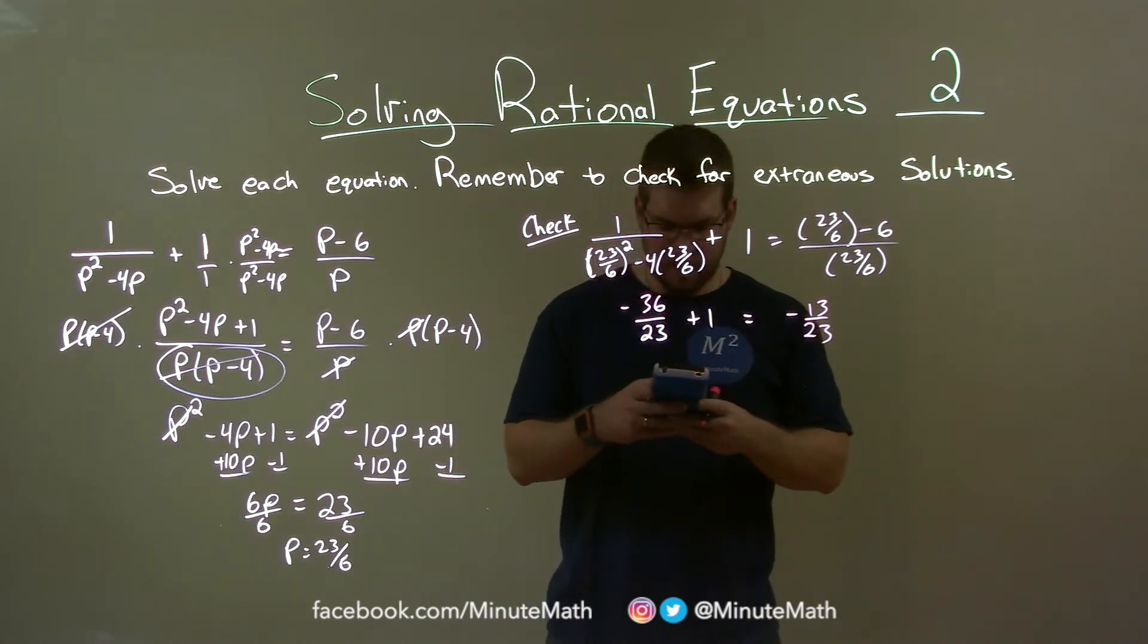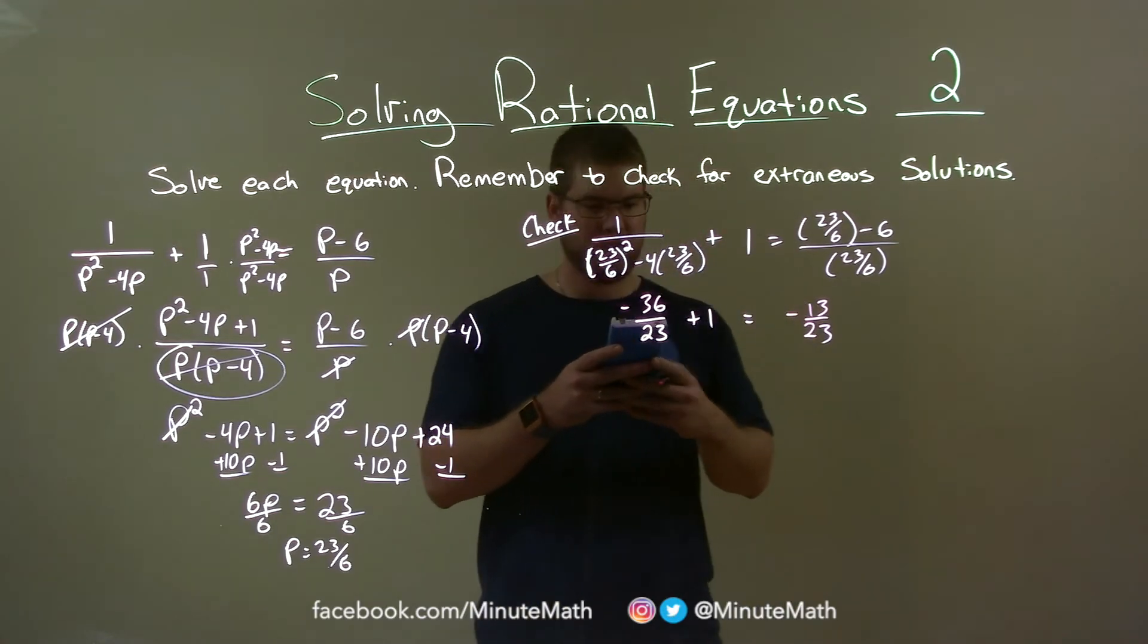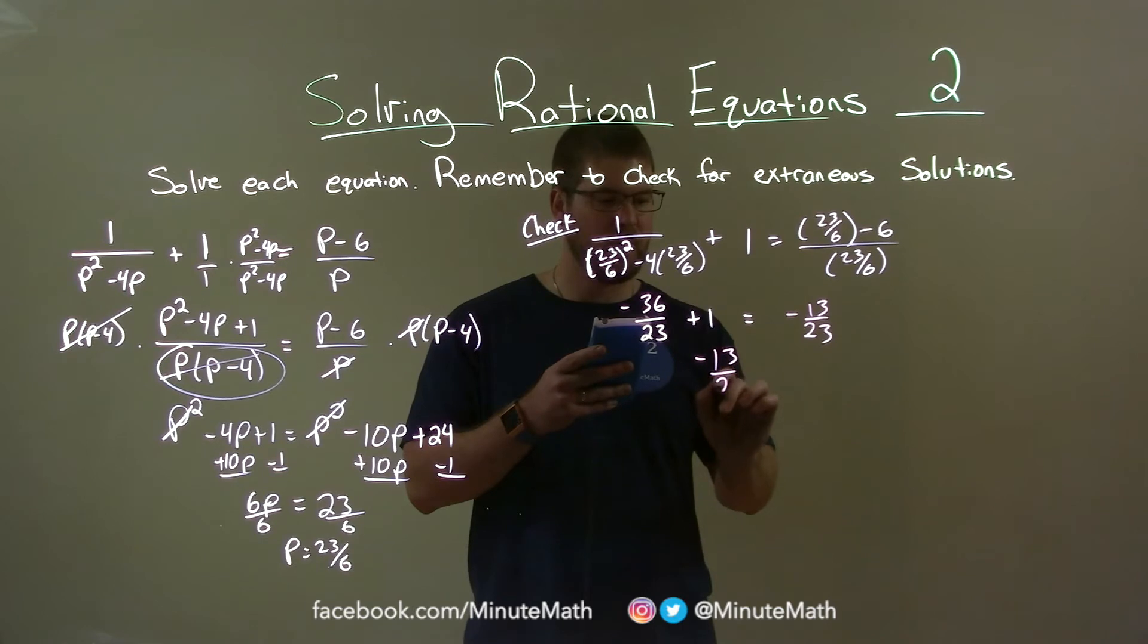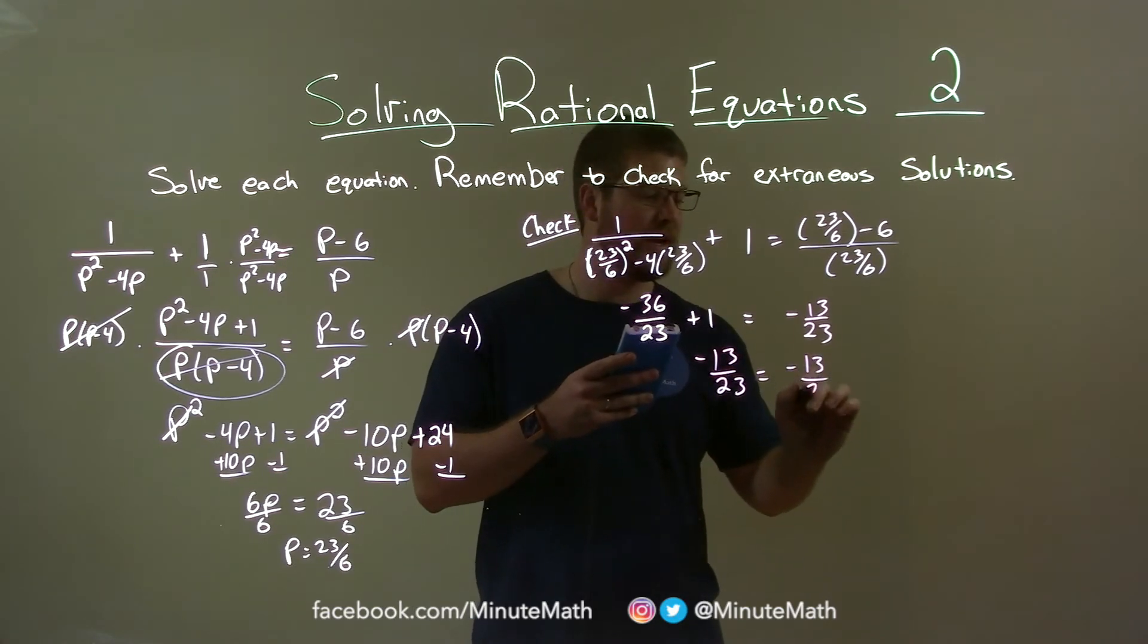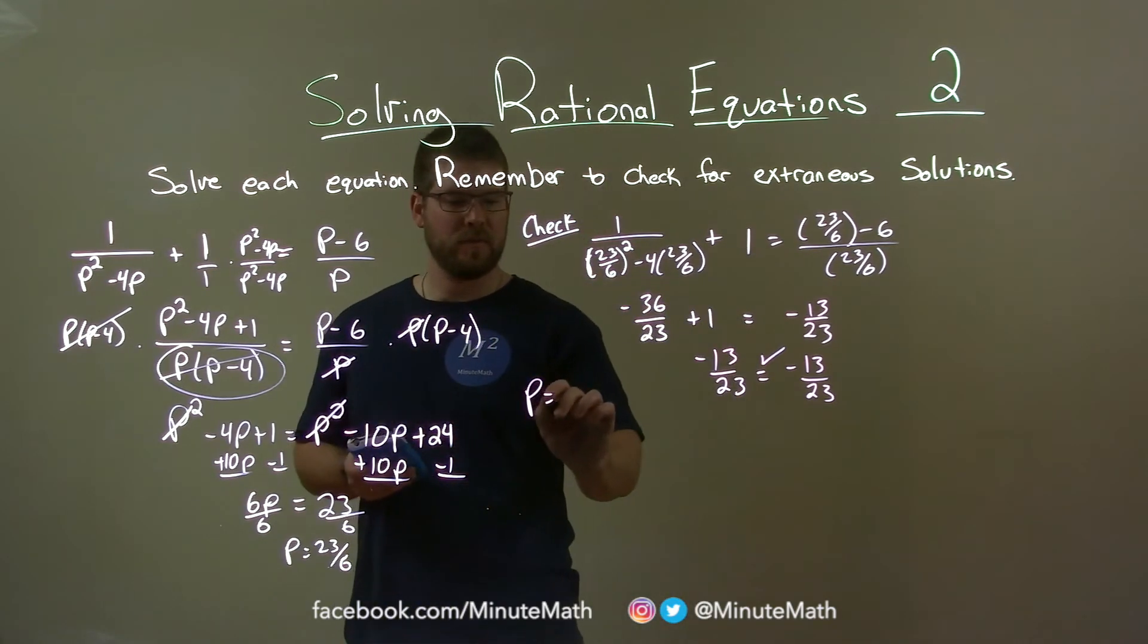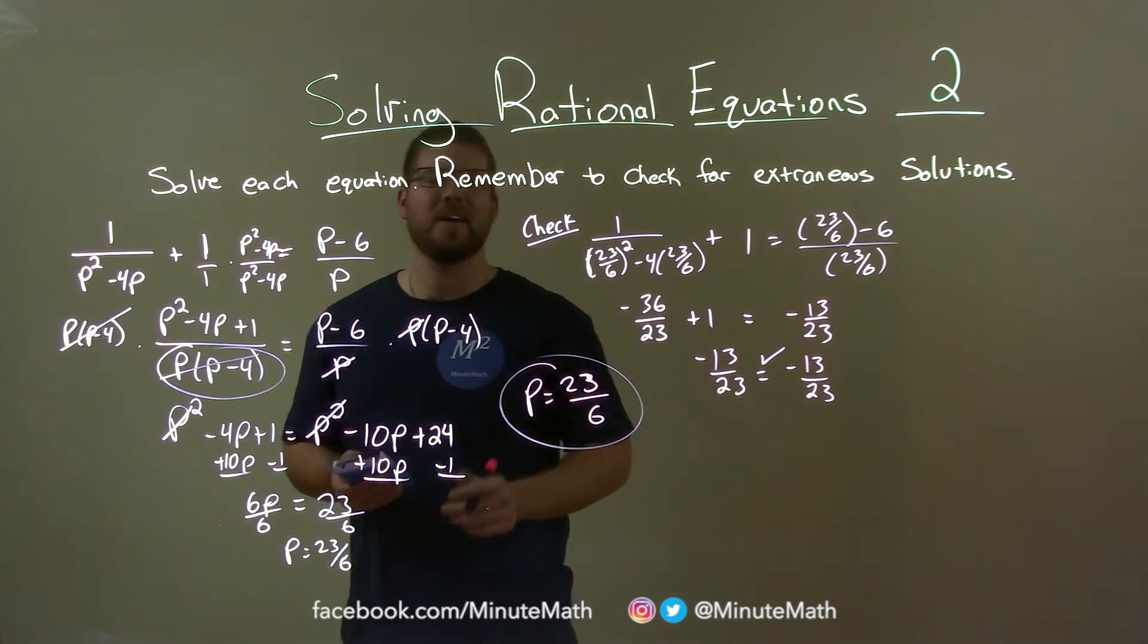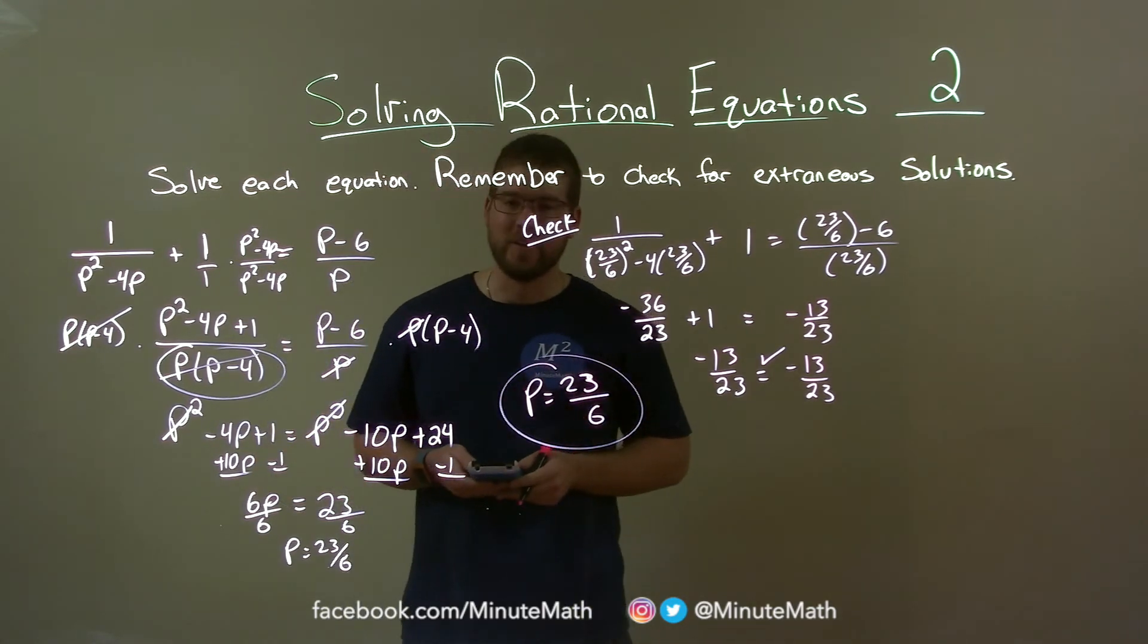So what's negative 36 divided by 23 plus 1, and that as a fraction is negative 13 over 23. So the left and the right-hand side are equal, meaning that p equals 23 over 6 is a true solution in our final answer.